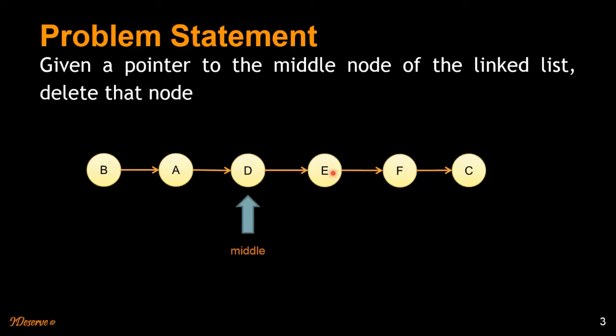So what we can do is we can copy node E's data here in node D and delete node E because we have duplicated the node here. That is the trick.